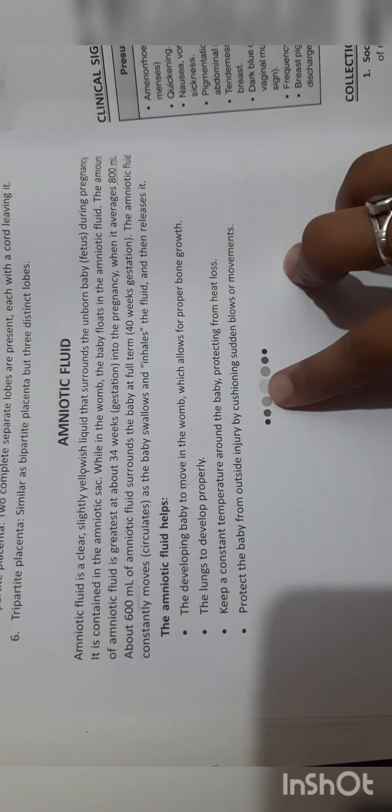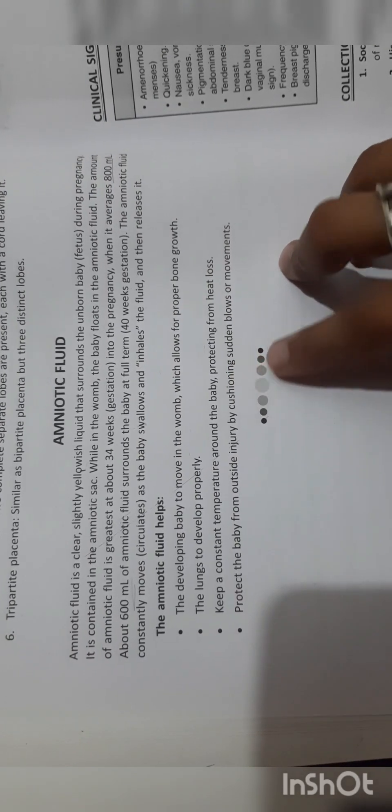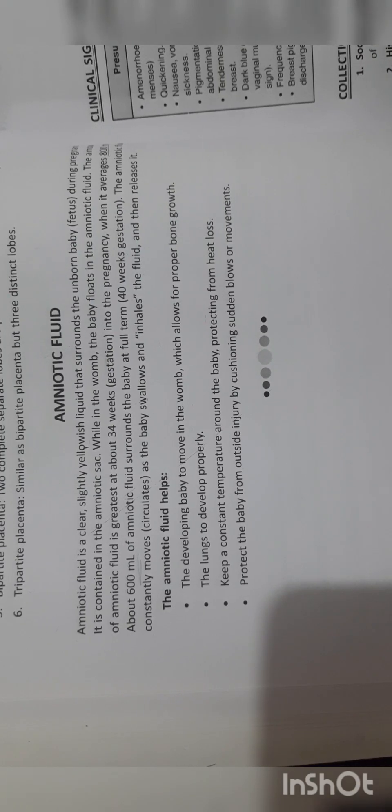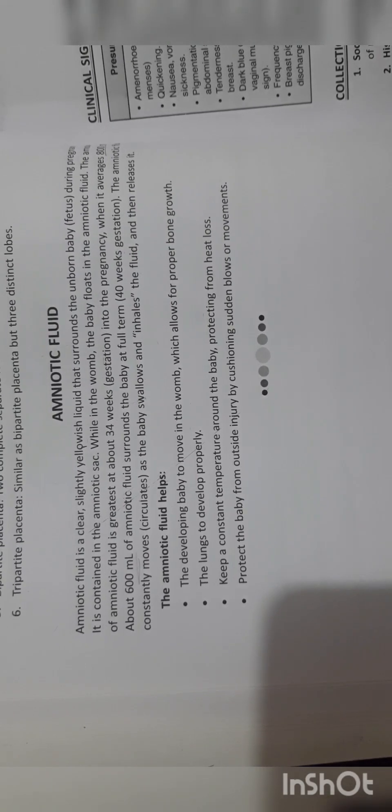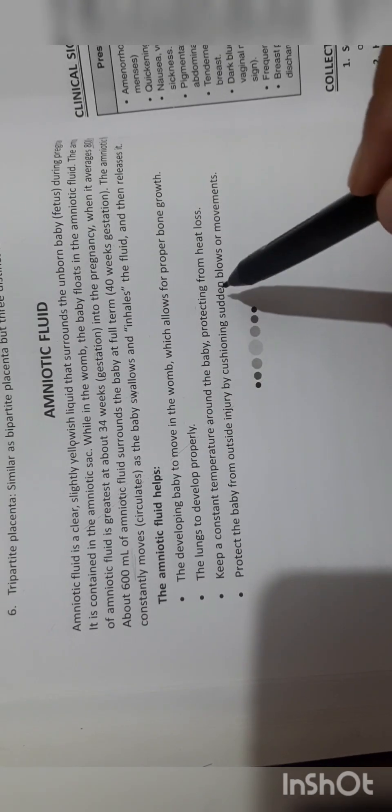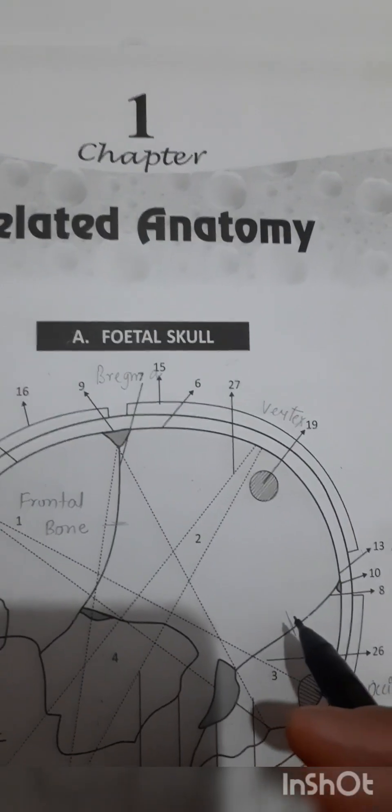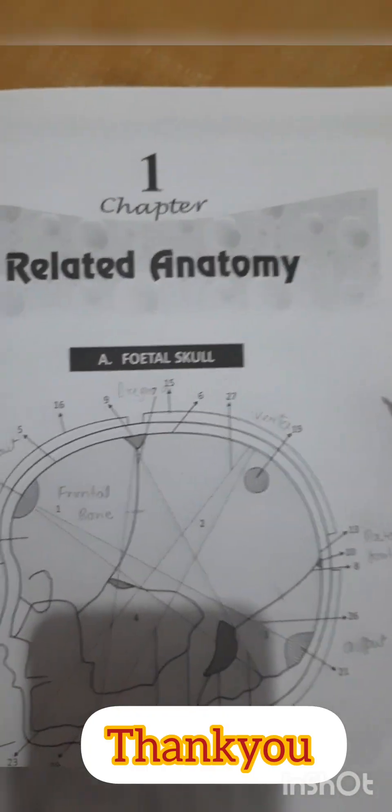Amniotic fluid helps the developing baby to move in the womb, which allows for proper bone growth. It keeps a constant temperature so the baby can maintain temperature, preventing hypothermia and heat loss. It also protects the baby from outside injury by cushioning sudden blows or movement. This is all about the anatomy of fetal skull, pelvis, placenta, and amniotic fluid. I hope you all will understand. Thank you.